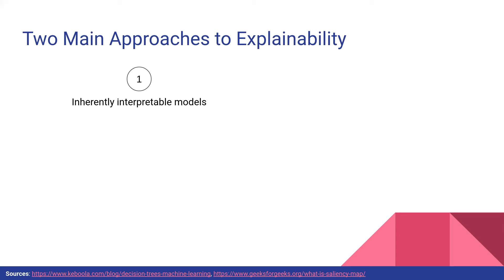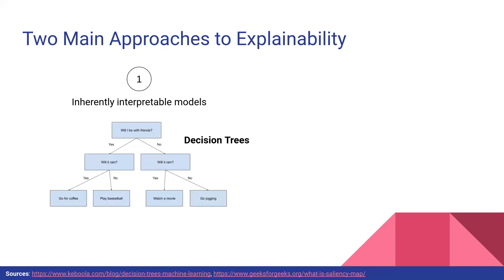There are two main approaches to explainability. The first involves models that are inherently interpretable — explainable by design. I'll use 'interpretable' and 'explainable' interchangeably. One example is a decision tree: at each node we make a yes/no decision and go down a different branch. It's inherently interpretable because your explanation is literally just the path it traces out, and you can look directly at the model knowing the explanation is 100% faithful to what the model is actually processing.